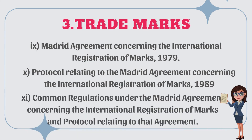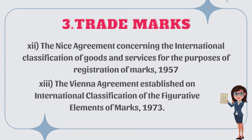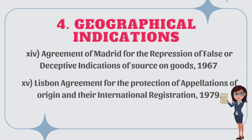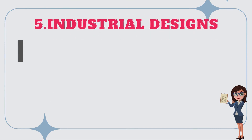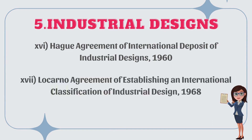Under the Madrid Agreement and Protocol relating to that Agreement: the Nice Agreement concerning the International Classification of Goods and Services for the Purposes of Registration of Marks 1957; the Vienna Agreement establishing an International Classification of the Figurative Elements of Marks 1973. Number four, geographical indications: the Agreement of Madrid for the Repression of False or Deceptive Indications of Source on Goods 1967; the Lisbon Agreement for the Protection of Appellations of Origin and Their International Registration 1979.